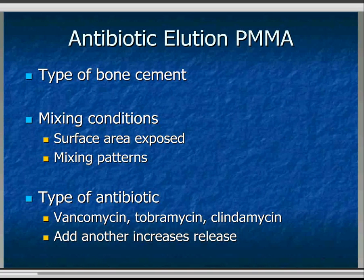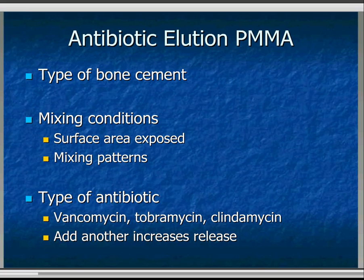Elution is opposite to fixation of implants — you want to make the cement as porous as possible so that the antibiotic can elute. It does vary between different types of antibiotics, so you need to check what you can add to cement. Some antibiotics aren't thermally stable and can't be added. Elution increases if you add two antibiotics, possibly due to the increased powder volume making the cement more porous.